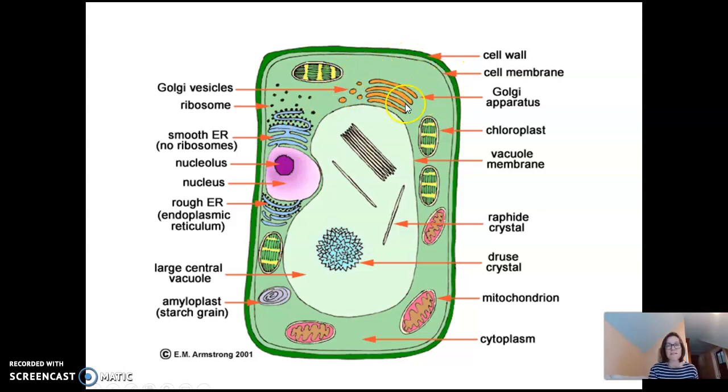Ribosomes are floating out in the cytoplasm and attached to this wavy structure called the endoplasmic reticulum. We have a Golgi apparatus, which modifies and packs proteins. And we have mitochondria, which some people call the powerhouse of the cell, but I want you to know this as the site of cellular respiration. We've got amyloplasts, starch grain, and we have cytoplasm.